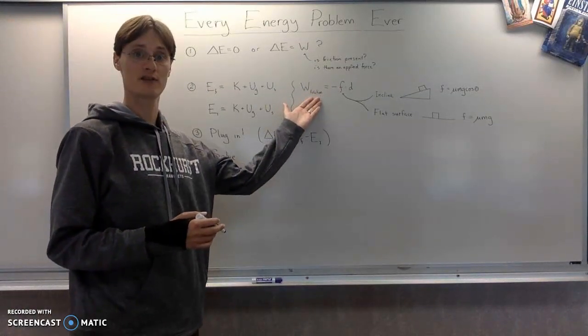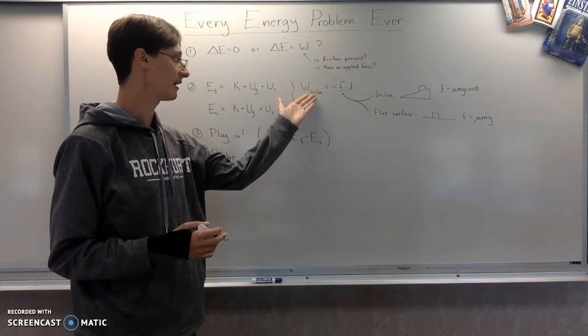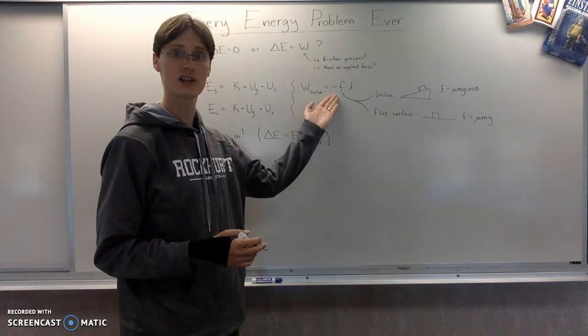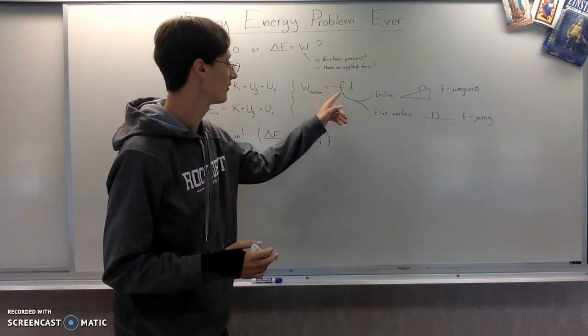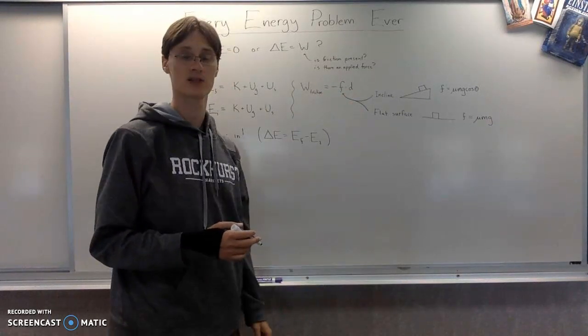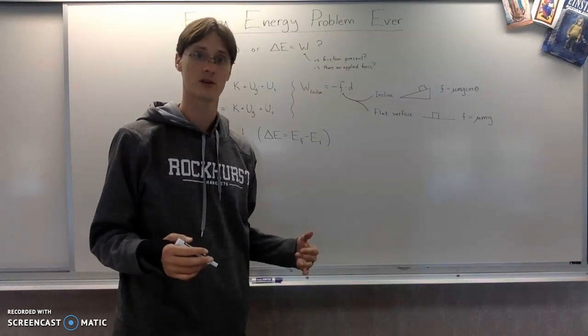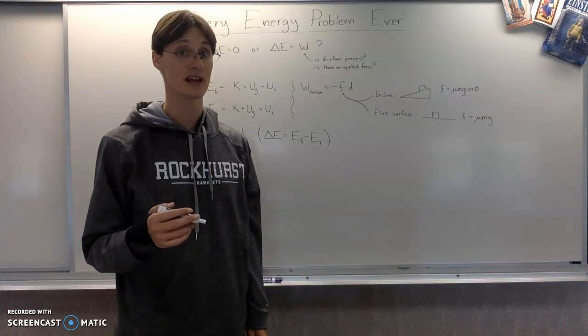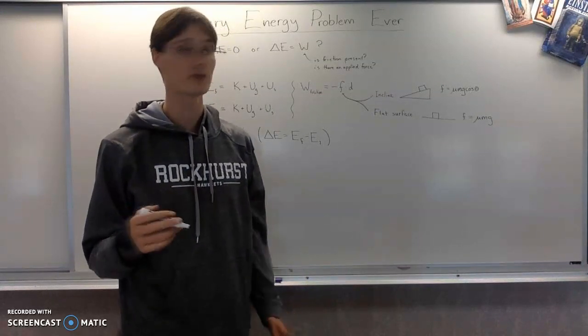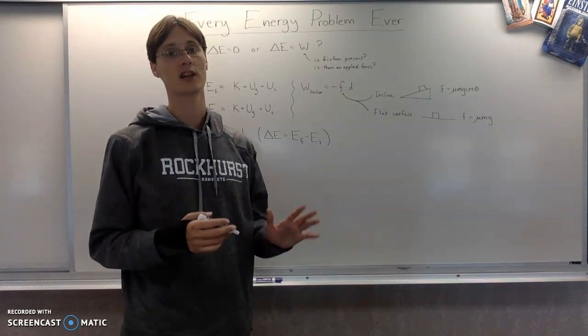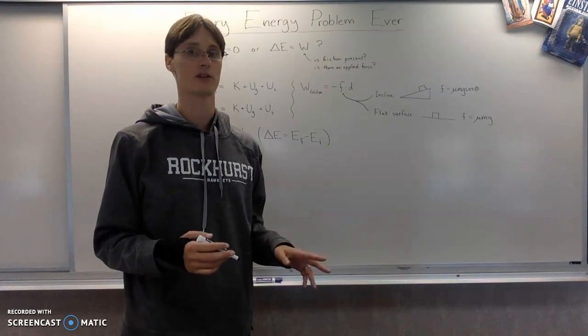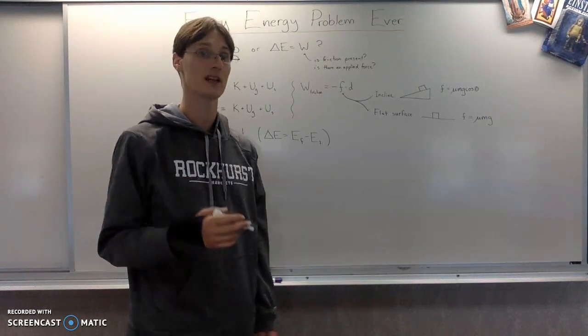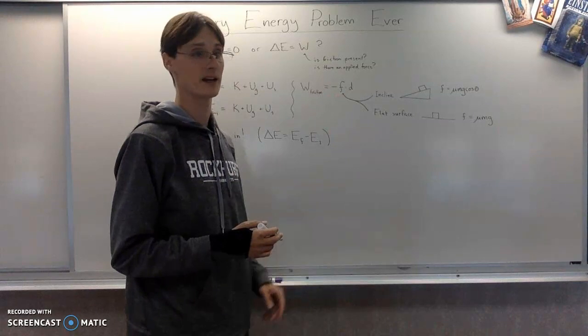And then if there is friction, as we referenced up here, then you're going to have to put in something for work, which if it's friction is always going to be negative FD, because work is force times distance, but friction is always going to do negative work. And if you don't write that negative sign in, no one's going to write it for you, and you will get the wrong answer.